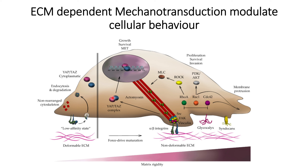This YAP/TAZ complex will then move into the nucleus and upregulate genes that will promote MET — that is mesenchymal to epithelial transition — or the mesenchymal to epithelial transition, so that cells can acquire mesenchymal characteristics and then move from one place to another.